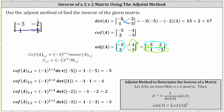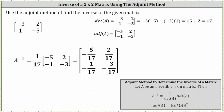Now we have all the information needed to find the inverse using the adjoint method — the determinant and the adjoint of A. The inverse is equal to 1 divided by the determinant times the adjoint of A. Since the determinant is 17, we have 1 divided by 17 times the adjoint of A. Performing the scalar multiplication, the first row gives us negative 5/17 and 2/17, and the second row gives us negative 1/17 and negative 3/17.